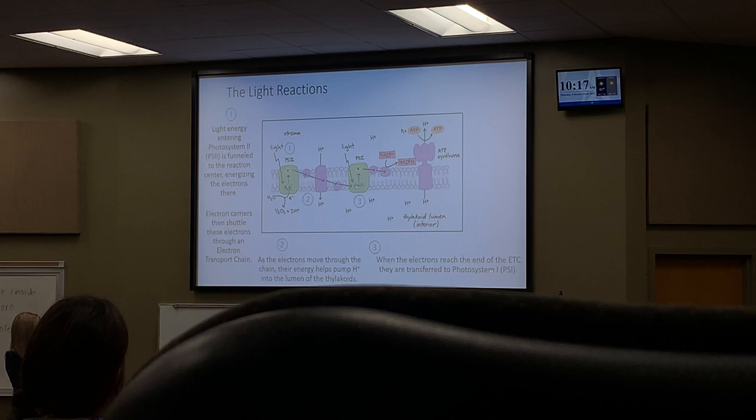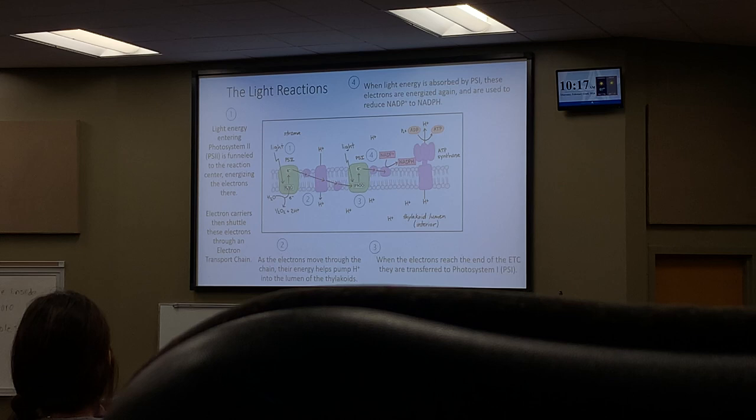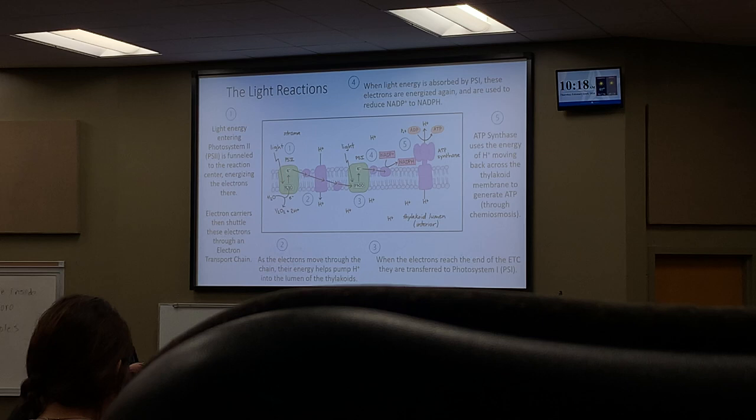Electrons reach the end of the ETC and are transferred to photosystem 1. Then, when light energy is absorbed by photosystem 1, the electrons are re-energized. Then they're used to reduce NADP+ to become NADPH. The enzyme puts them onto NADP+, so it becomes NADPH. These processes are all happening simultaneously, not one at a time — we're just tracing the flow.